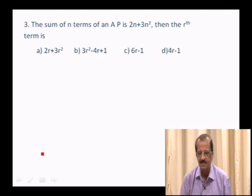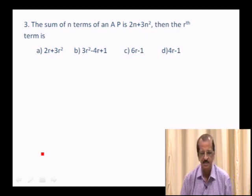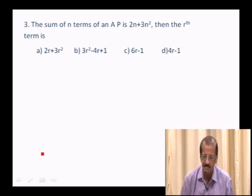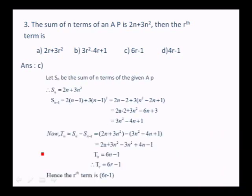Question 3: The sum of n terms of an AP is Sn = 2n + 3n². Find the rth term. Use Tn = Sn − S(n−1). We have Sn = 2n + 3n² and S(n−1) = 3n² − 4n + 1. Therefore Tn = (2n + 3n²) − (3n² − 4n + 1) = 6n − 1. So the rth term is 6r − 1. Answer: option C.